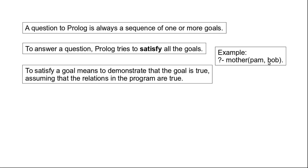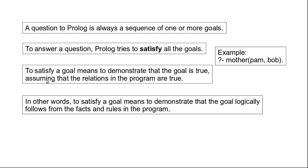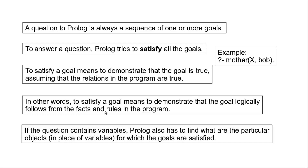What do we mean by 'satisfy'? To satisfy a goal means to demonstrate that the goal is true, assuming that the relations in a program are true. In our Prolog program we write the relations as facts or rules, and using these facts and rules, if we can demonstrate that the goal is true, then we say that the goal is satisfied. In other words, to satisfy a goal means to demonstrate that the goal logically follows from the facts and rules in the program.